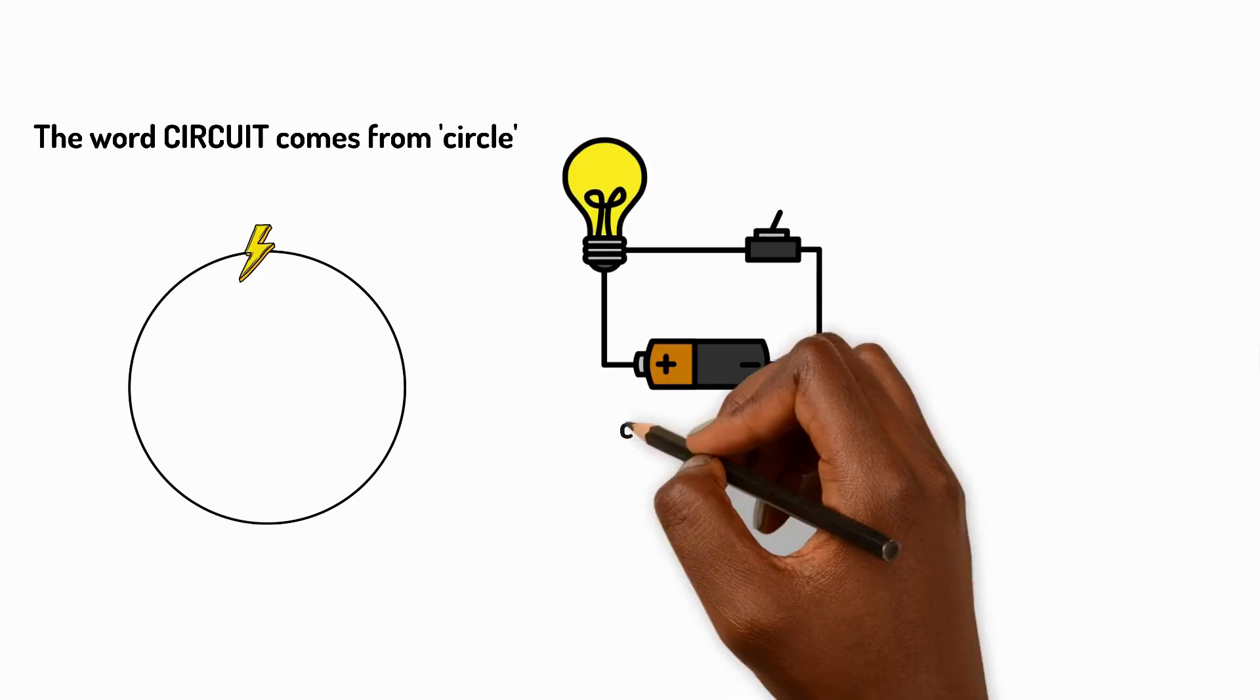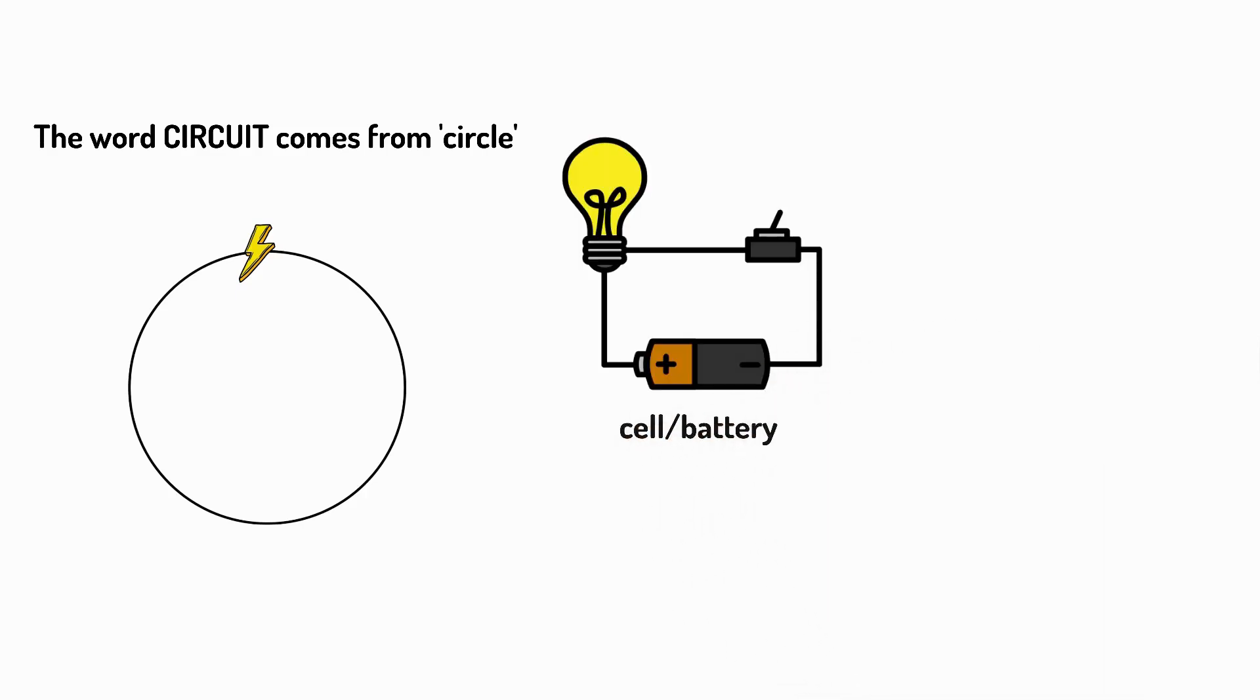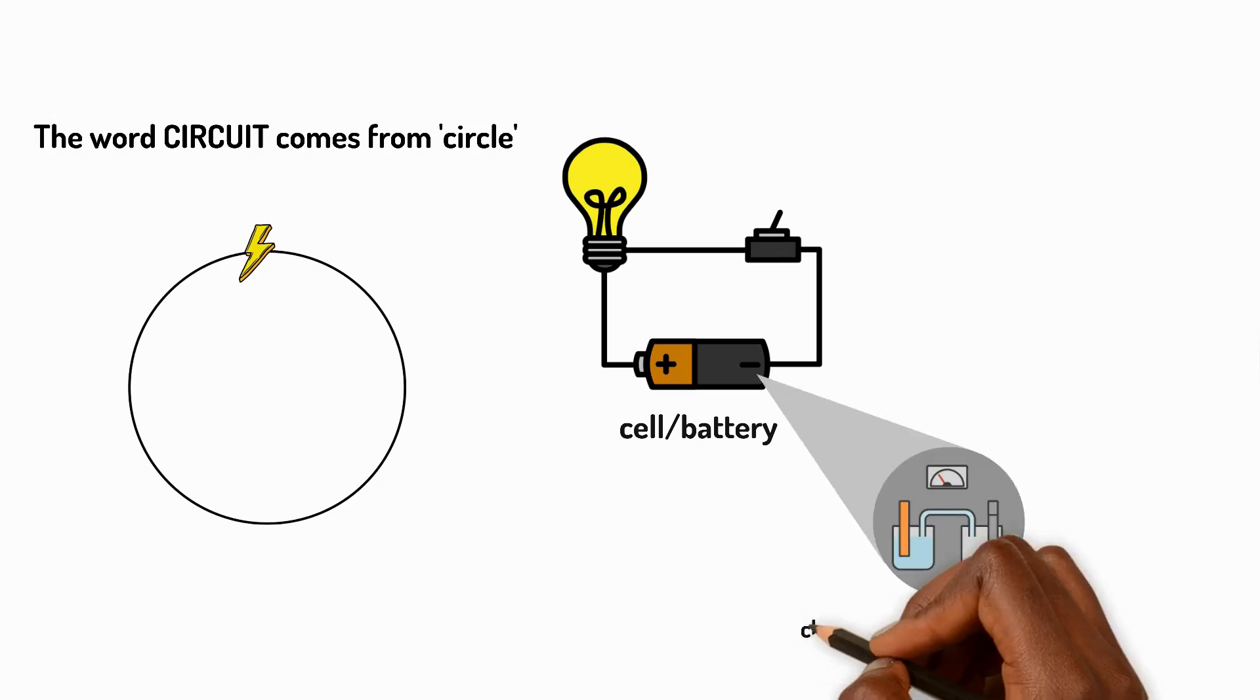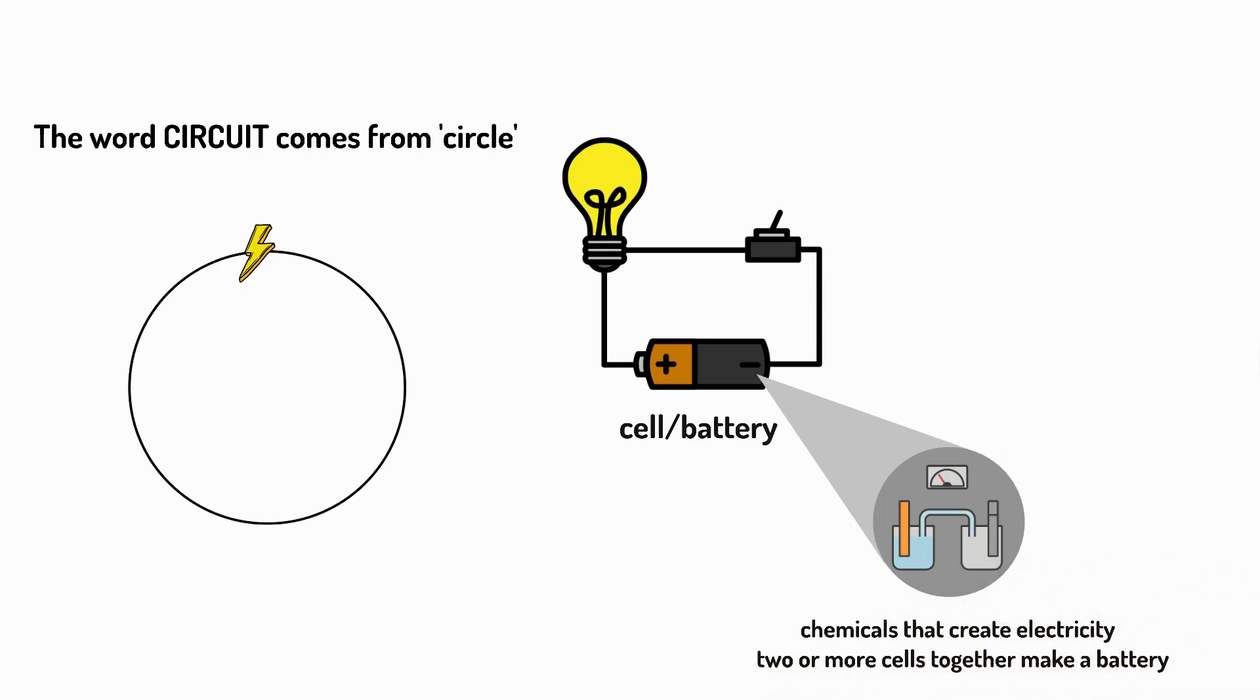Most small circuits start with a cell or battery. A cell is a small container of chemicals that create electricity. Two or more cells together make a battery.